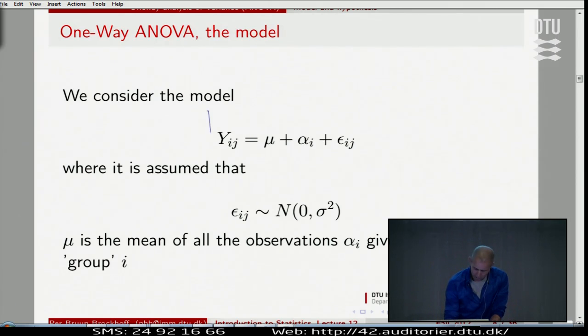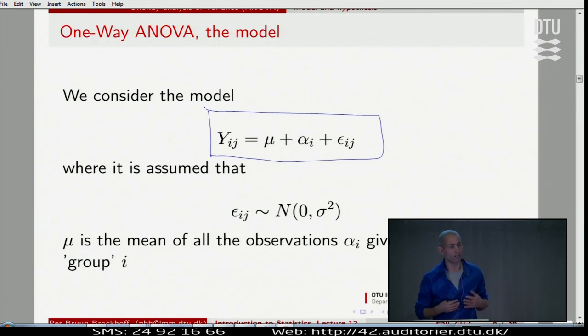We consider the model here that each individual observation, y_ij, considered as a random variable, it's not going to be the same each time. Next time we do an experiment, next time we sample a person in a group or whatever we are measuring, it will come up as a different number. That's the core of our statistical thinking.